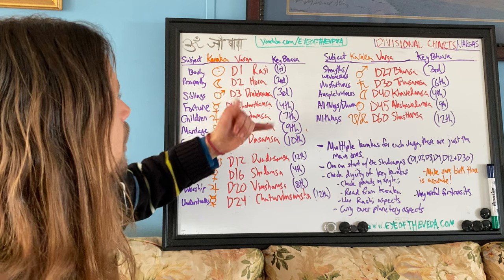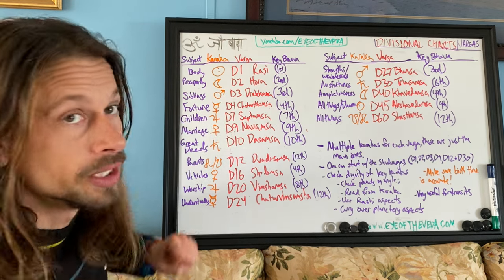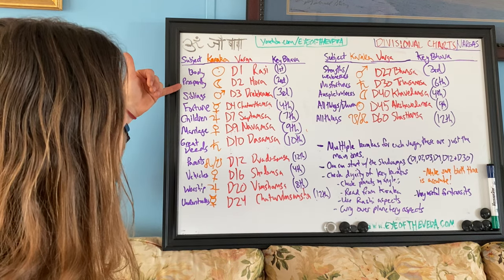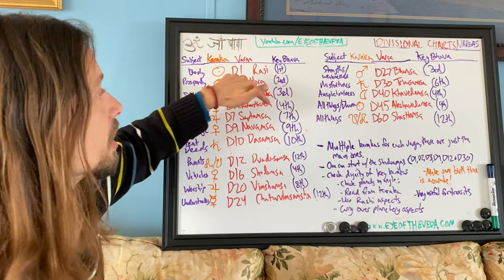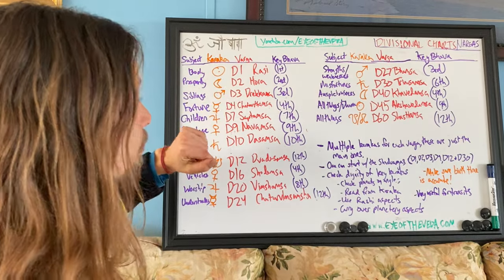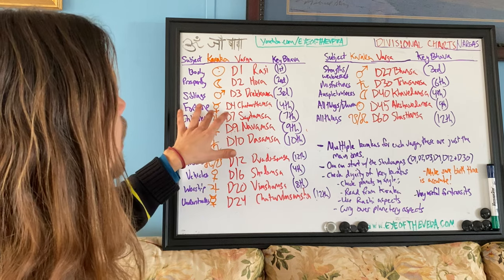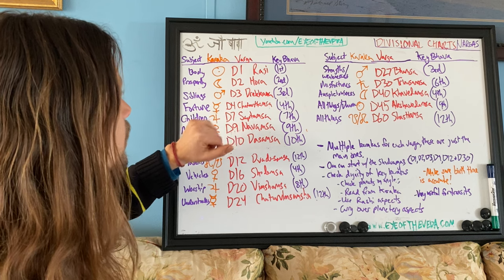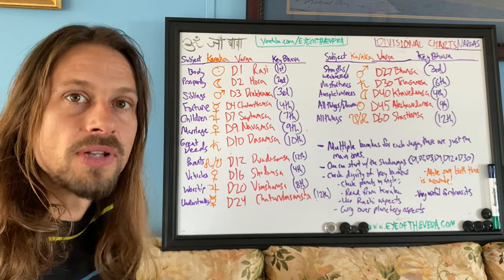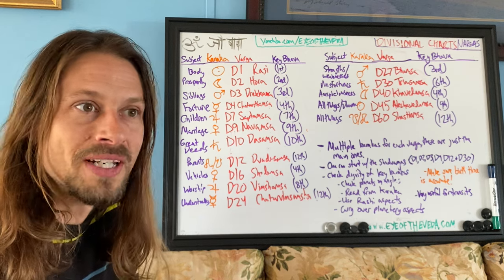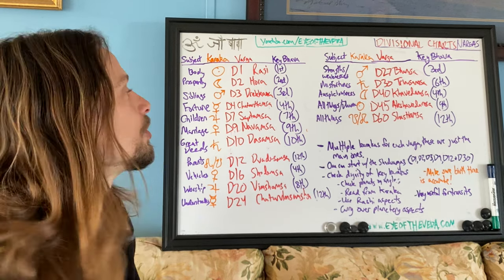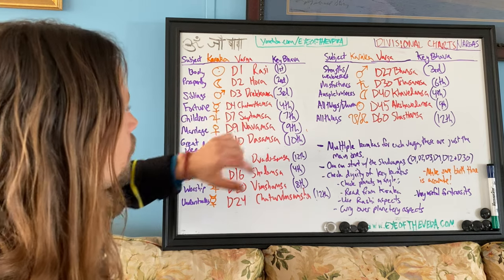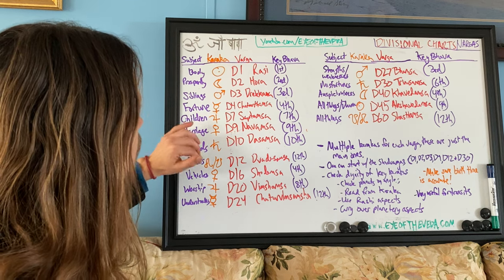The D4, the Chaturthamsha, is the Varga of fortune or Bhagya — having more than your fair share in life. This is a big Varga for financial astrology and for whether someone will make a lot of money investing. Mercury is the Karaka, as the planet of playing the game of life to win — he rules how much fortune you'll get. Then you look at the fourth bhava for that.